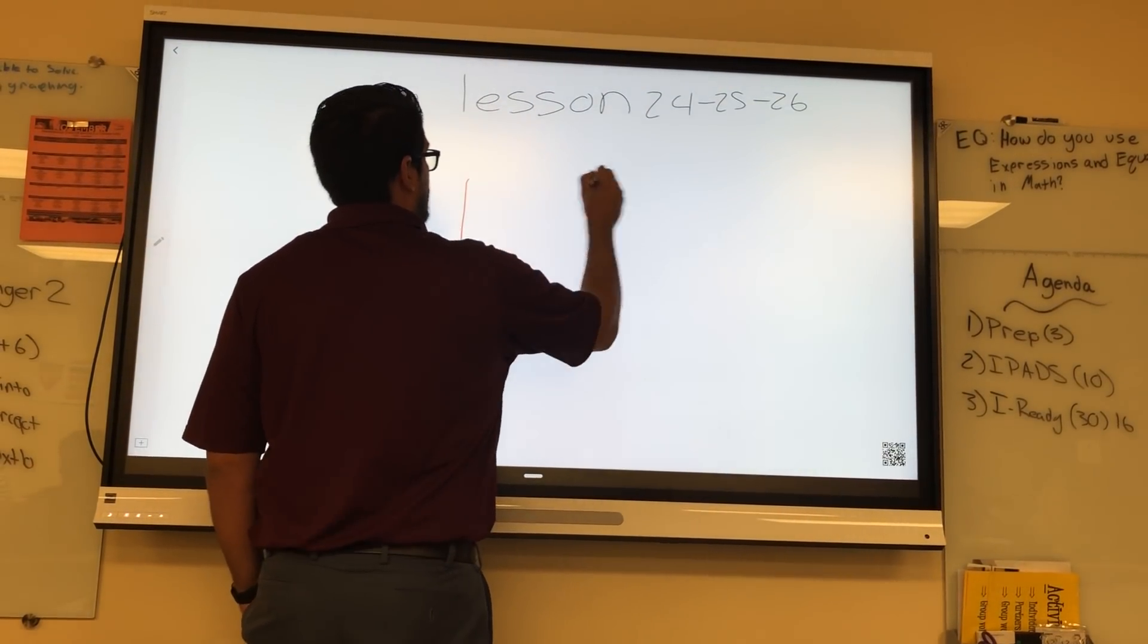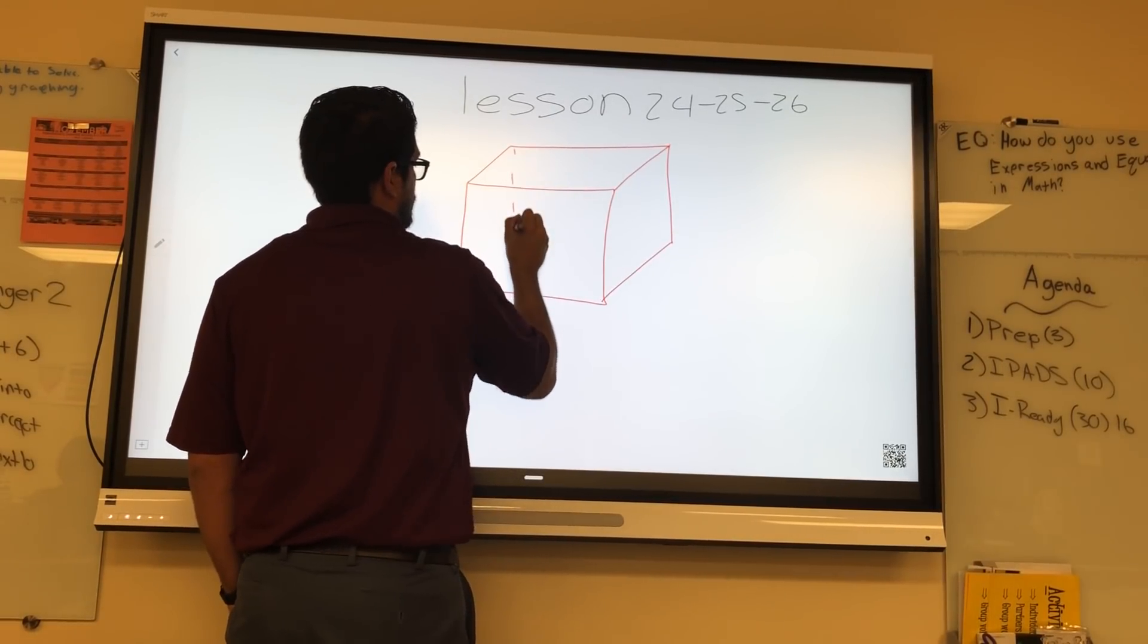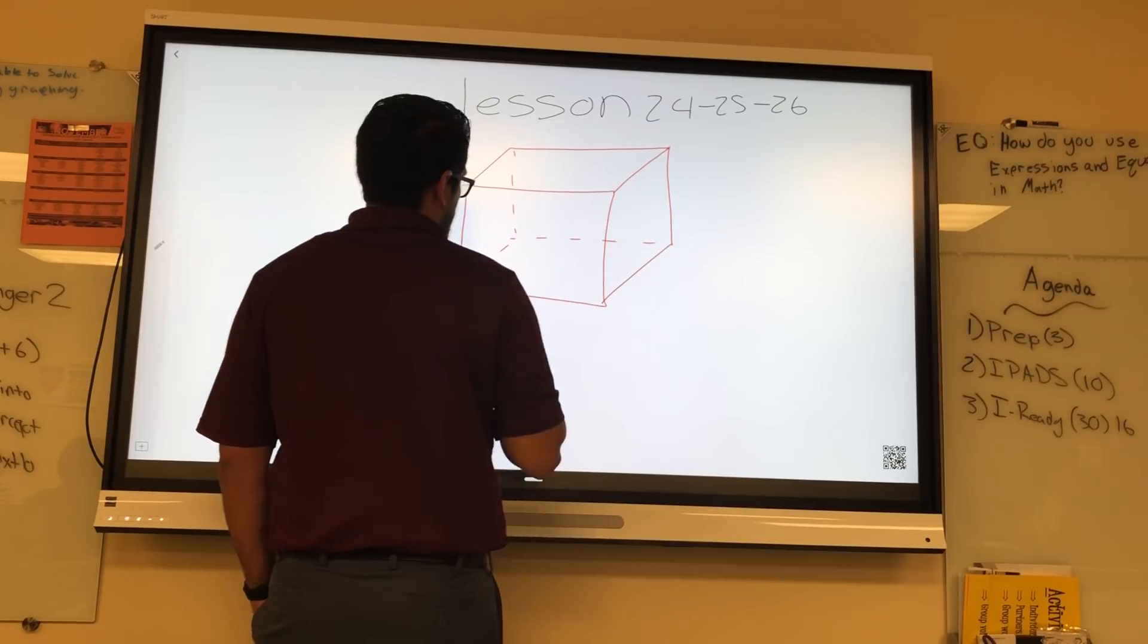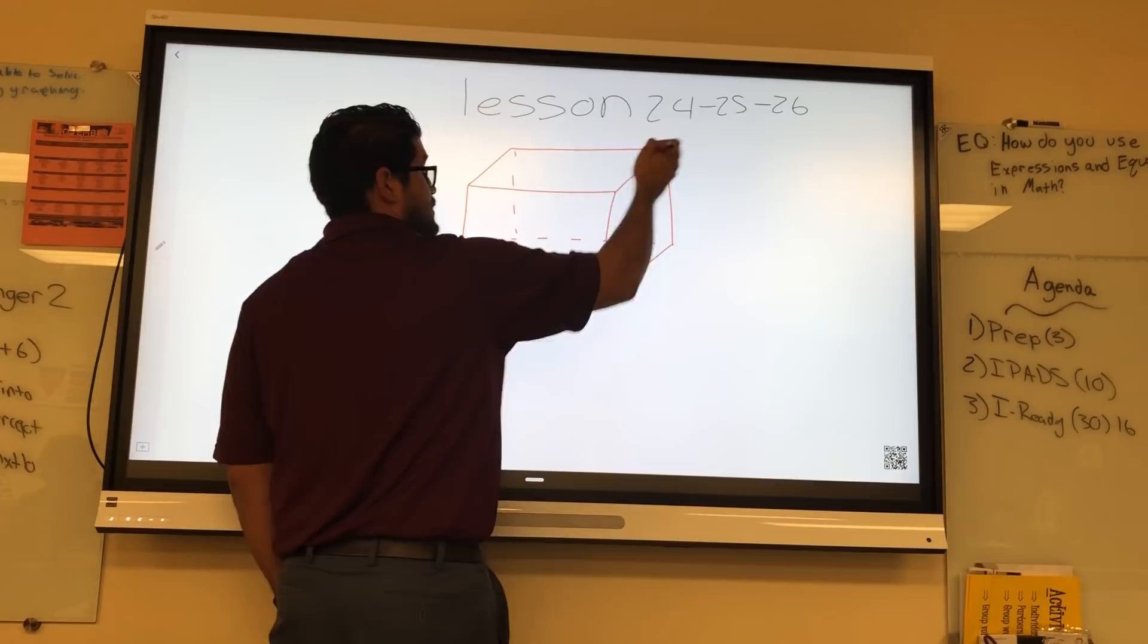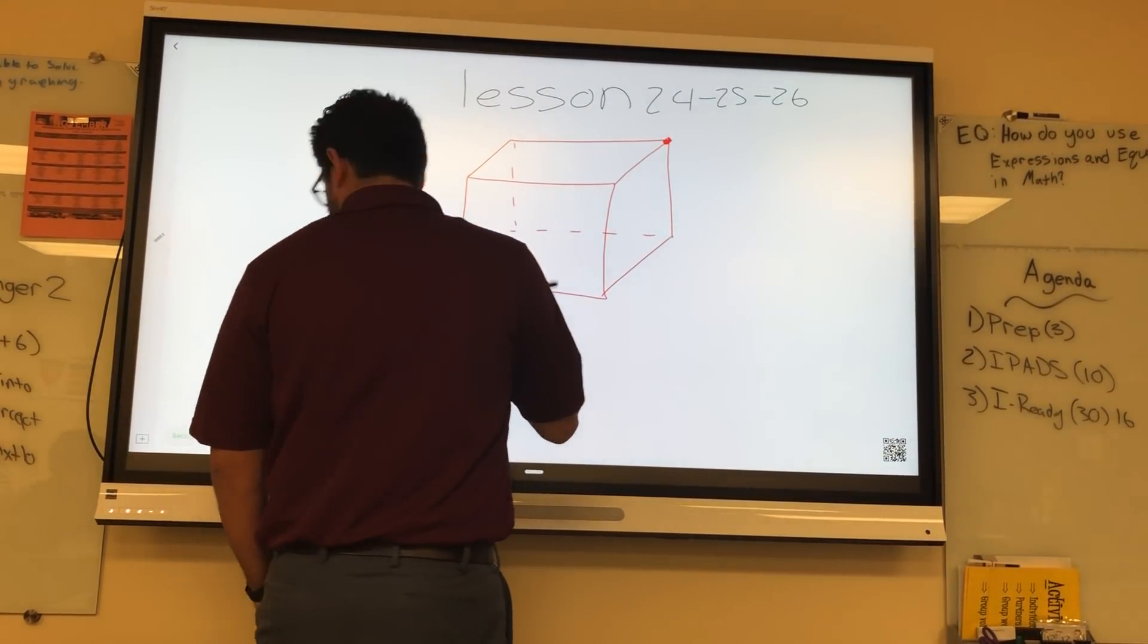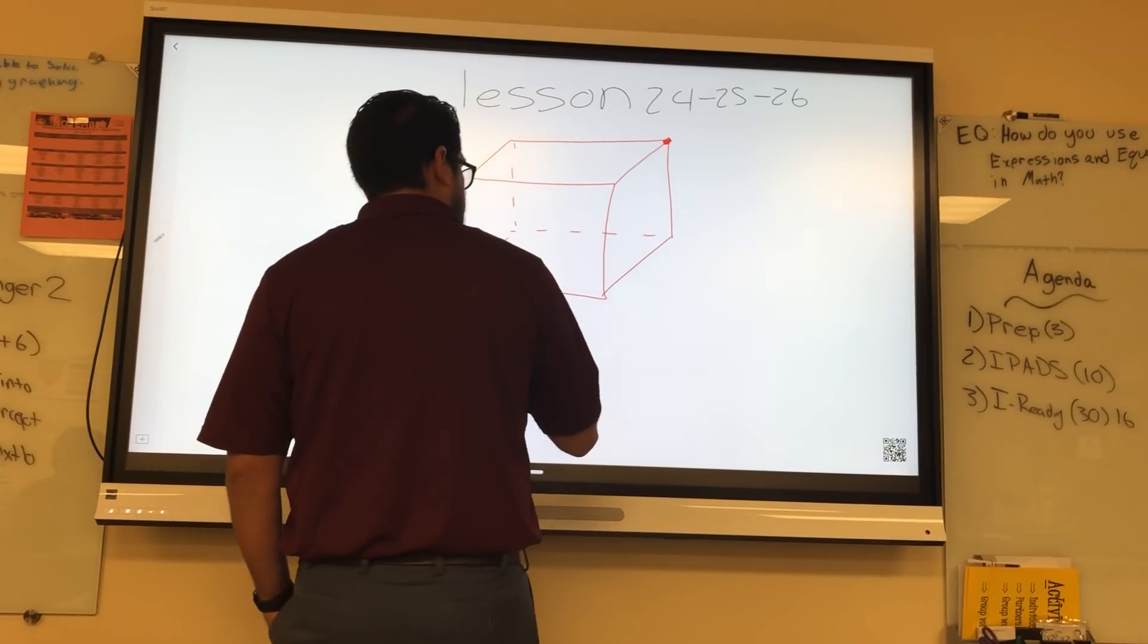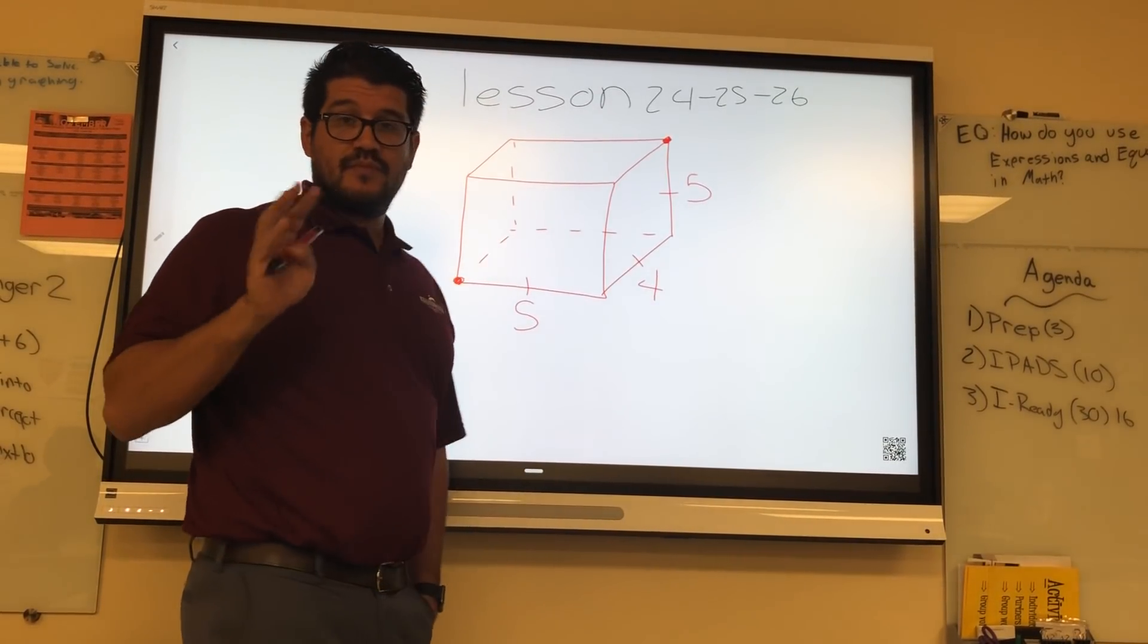Okay, you're going to have a rectangular prism, and I'm going to ask you to find this diagonal from here to this diagonal, which is the longest line in the entire box. Okay, so let's make up some numbers here. I'm going to get 5, 4, and 5. All right, so this is what we're doing.